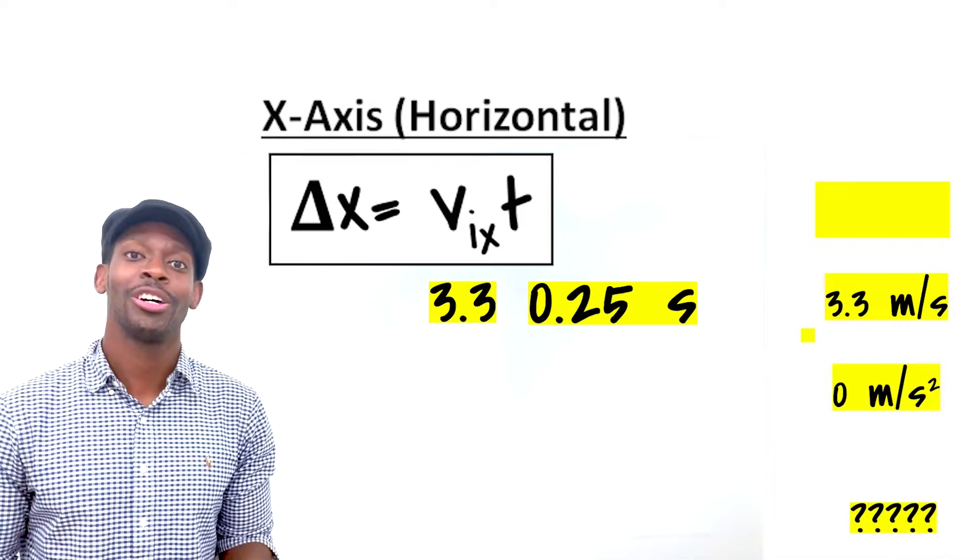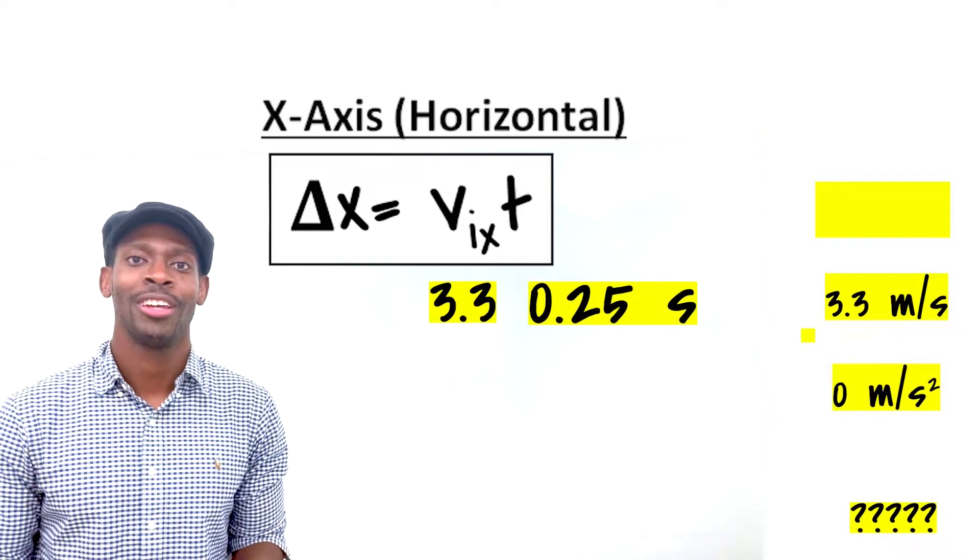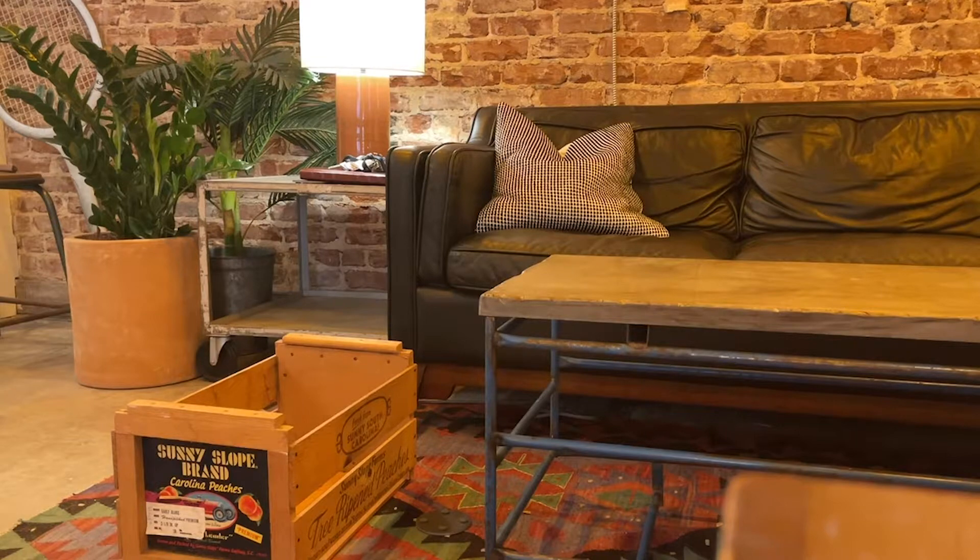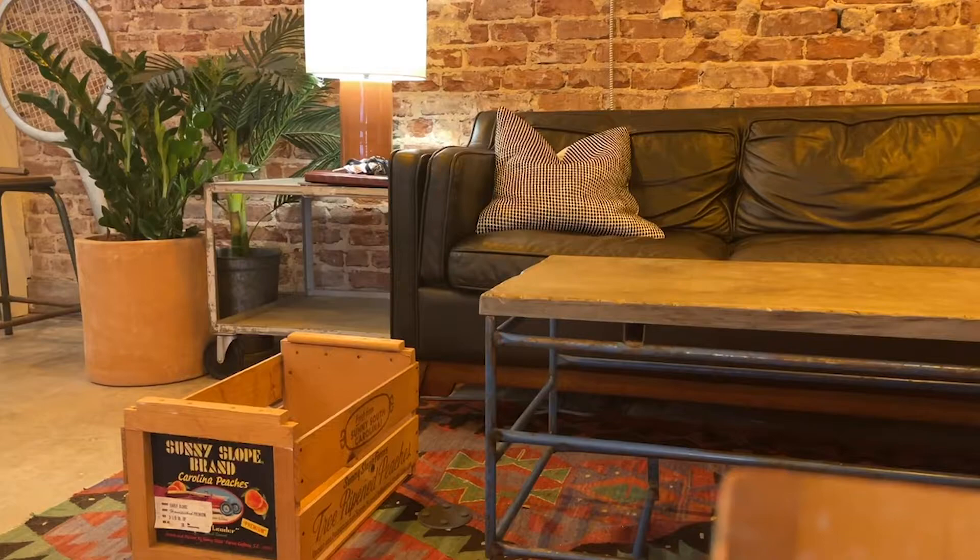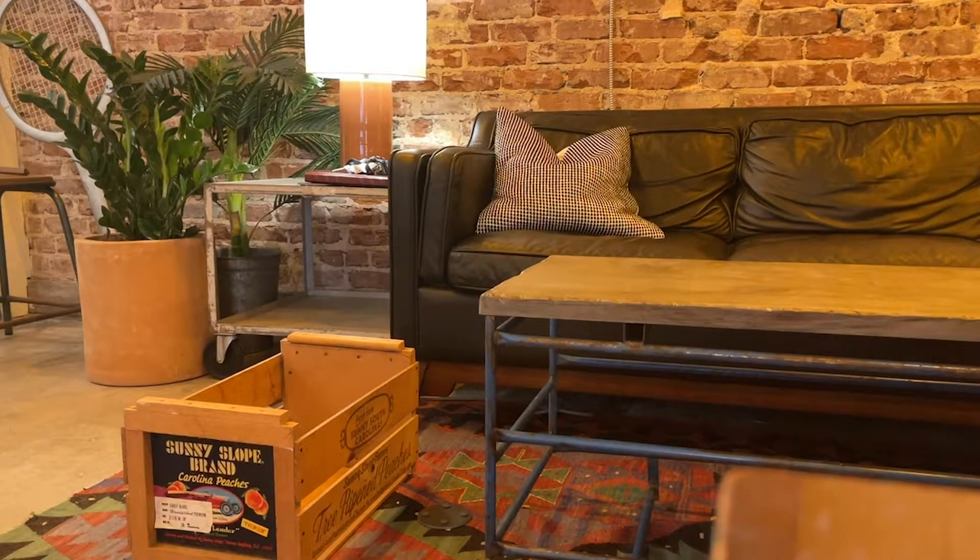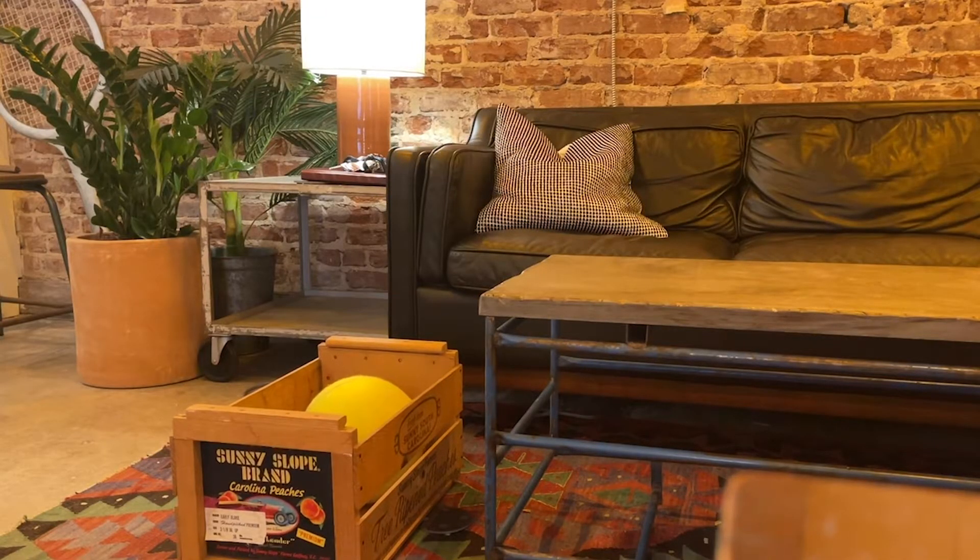And this will tell me how far I need to place this bin. Based on the conditions of projectile motion, we're able to predict where I can place this bin. And it's telling me I can place it 0.83 meters away from the table. Let's see. All right.